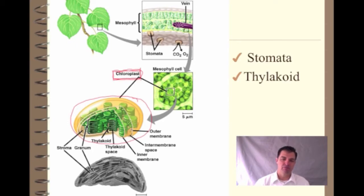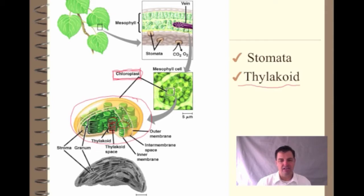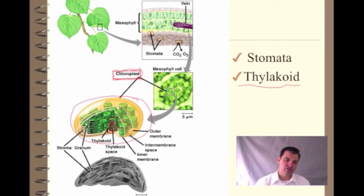The chloroplast has an outer membrane, an inner membrane, and then these little stacks — each one of these is called a thylakoid. A thylakoid is one of these; I always think they look like little junior mints. If you stacked up a bunch of junior mints, each one would be a thylakoid. Together those things are called the stroma. You see another word here, stomata, that's also important.